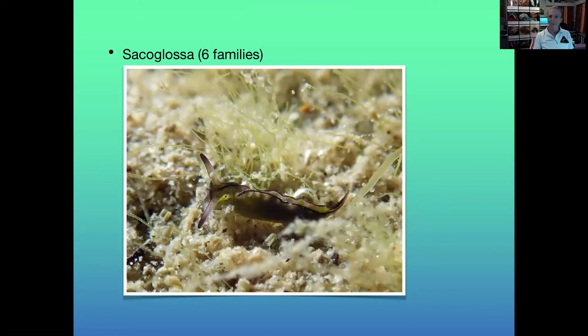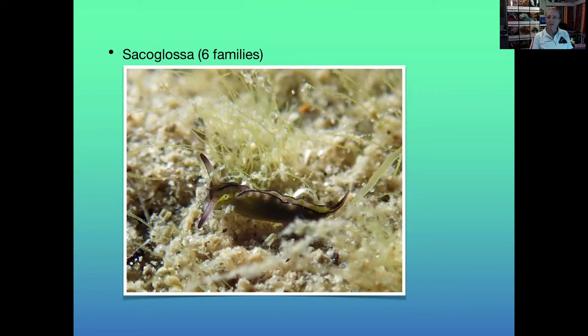The Sacoglossa are sap-sucking slugs — herbivores with that dagger-like radula that pierces the algae so they can suck up the inside. Some can actually sequester chloroplasts from the algae and then use it like solar power. Members of this order can be hard to classify because some have a shell they can retract into, others have a bivalve shell, some have a reduced shell, and some have no shell at all — it's really just a matter of learning which slugs fit into which order.